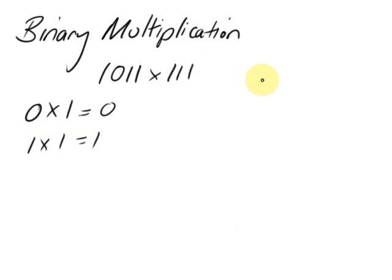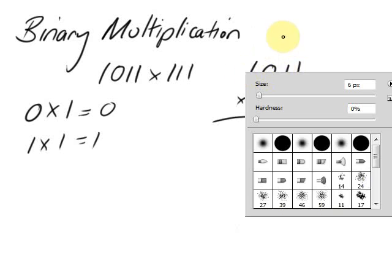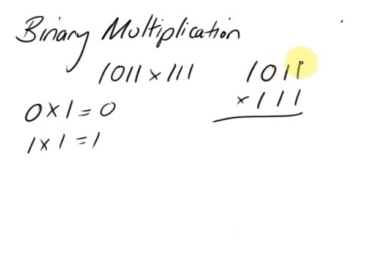If we're going to write this out in a more useful way, it will be 1011 times 111. This is going to take you back to some primary school maths. First of all, let's multiply this number, the 1011, by this one here.